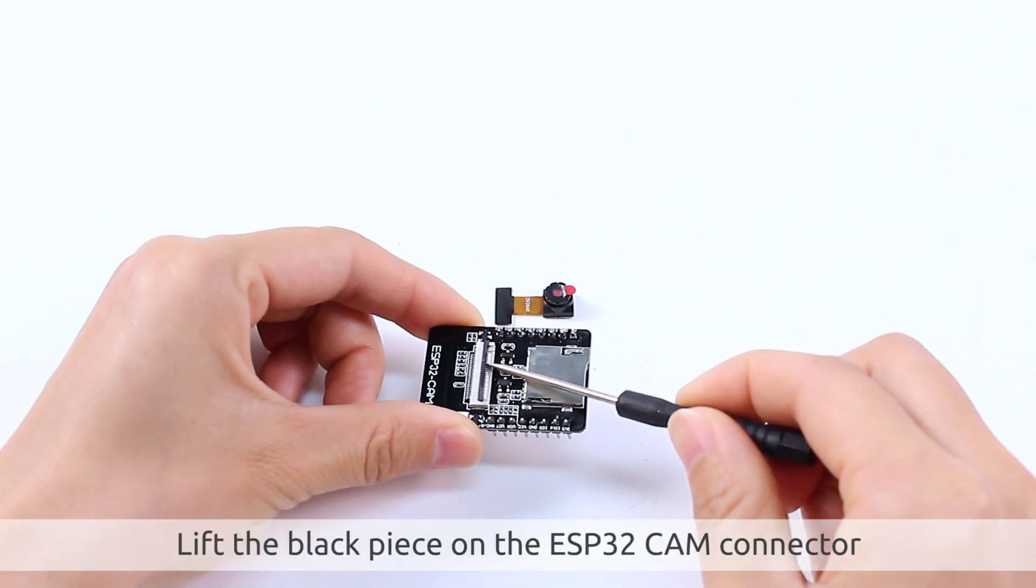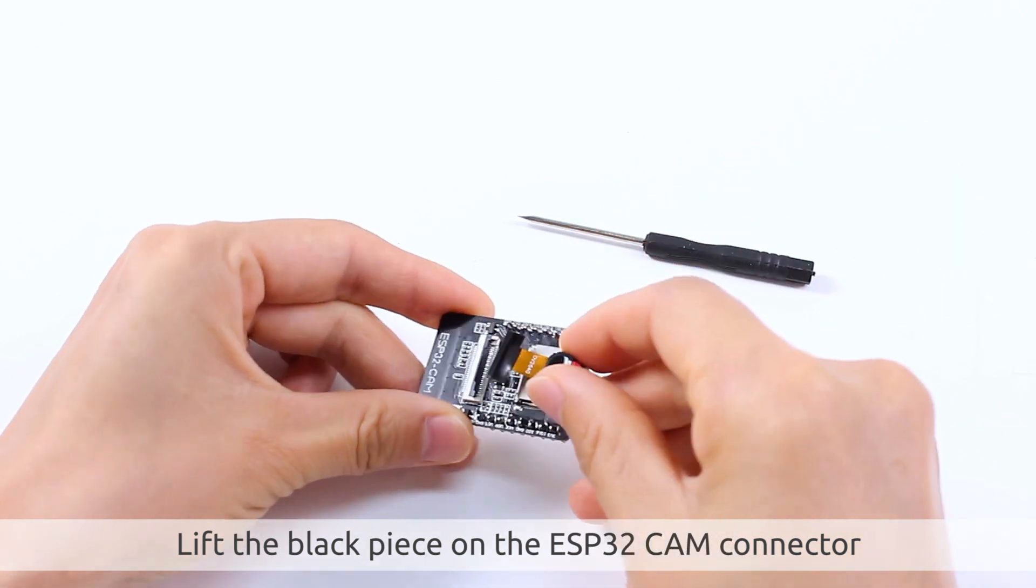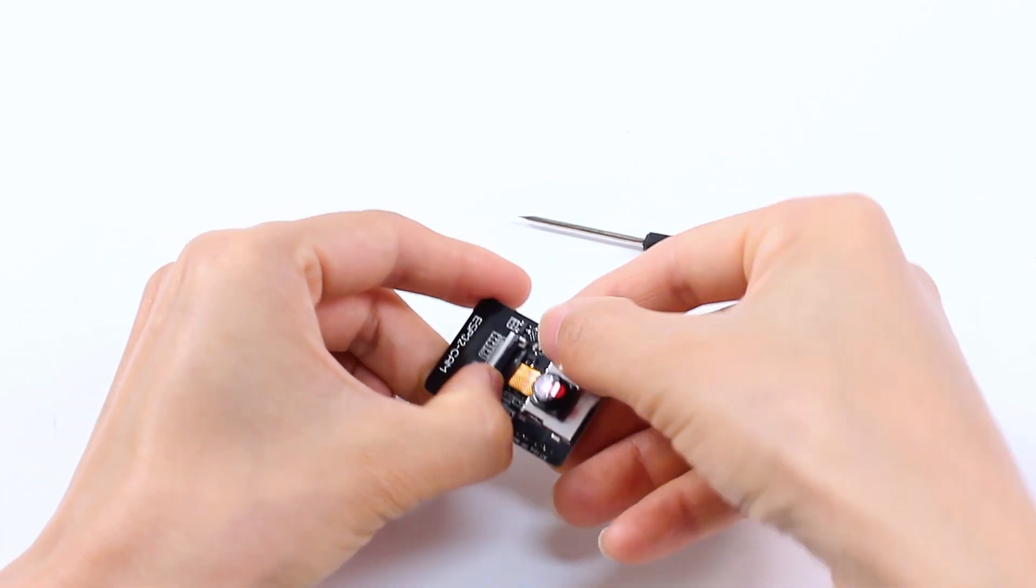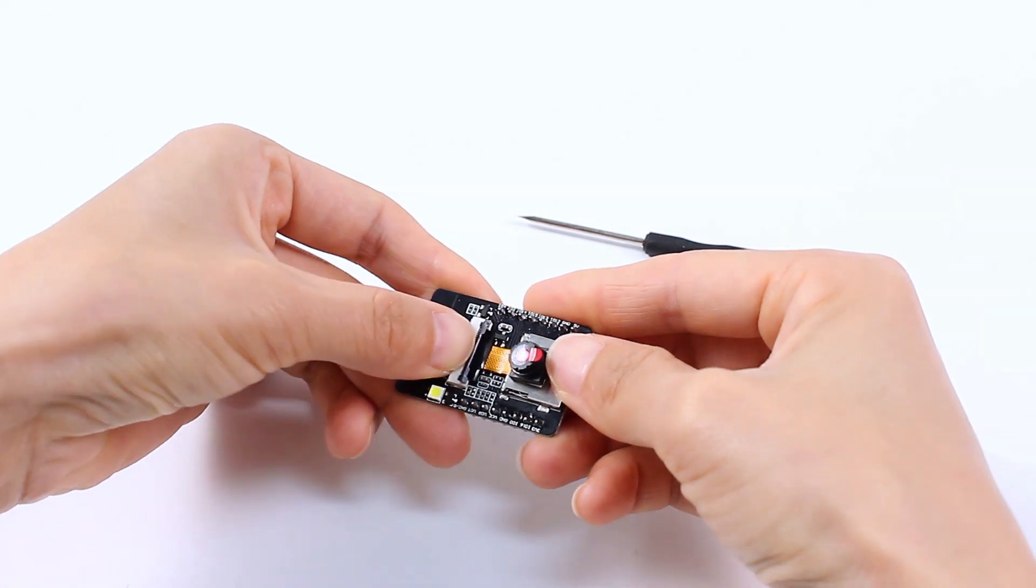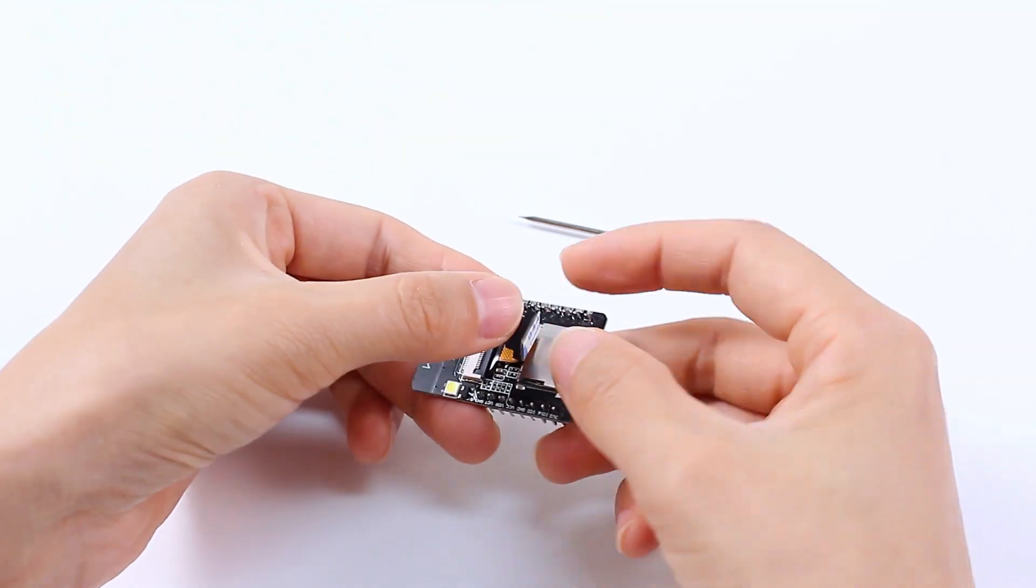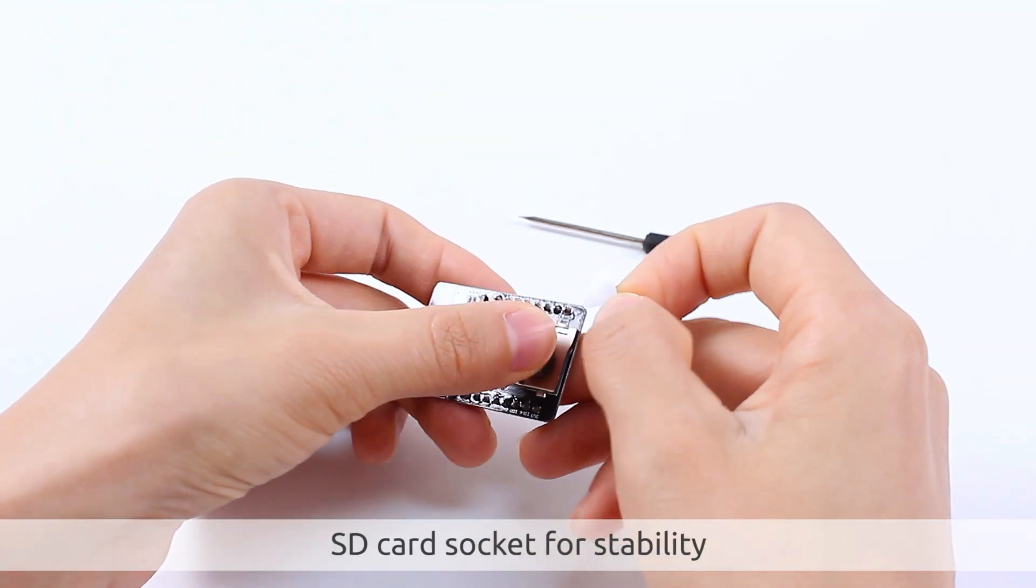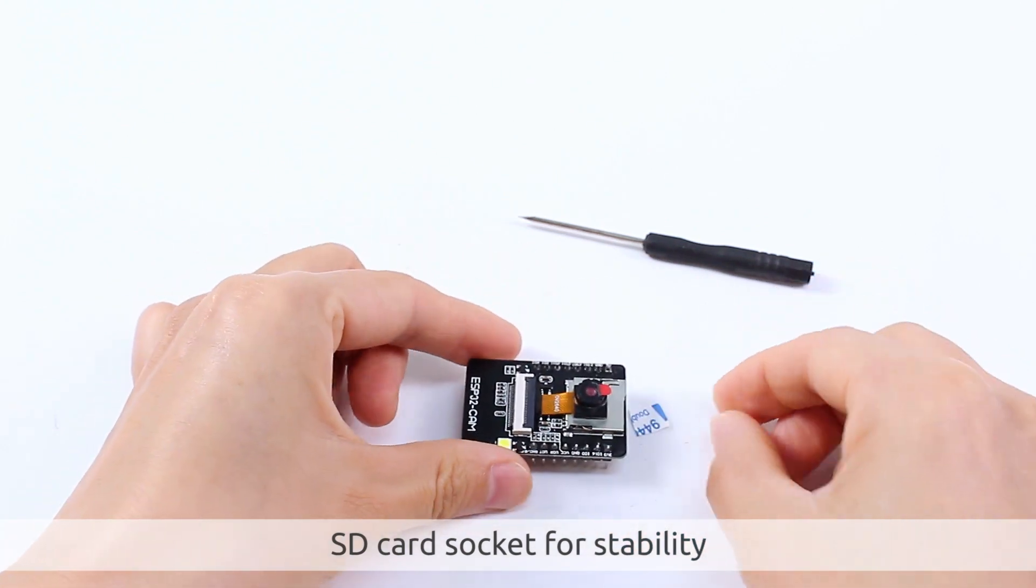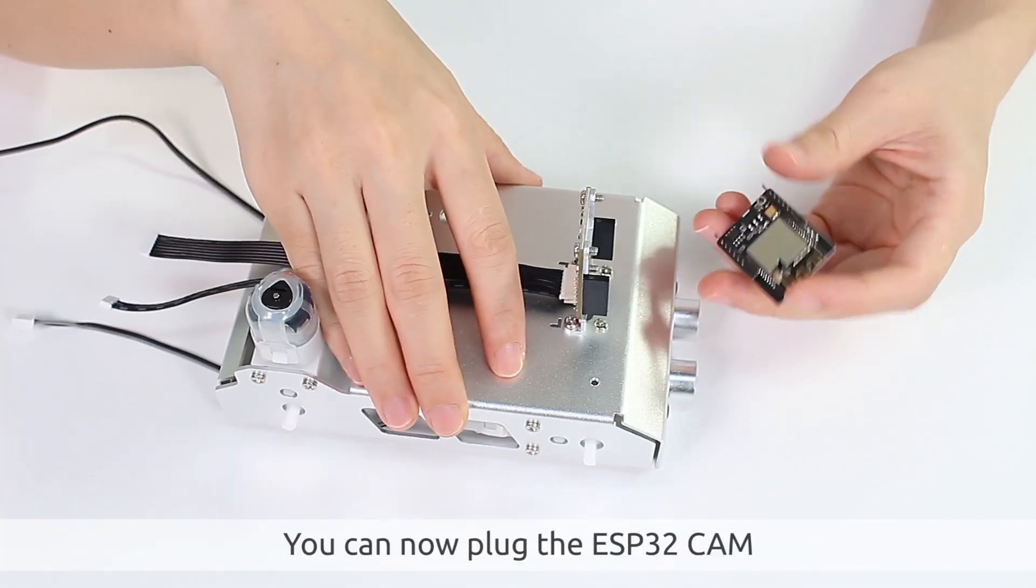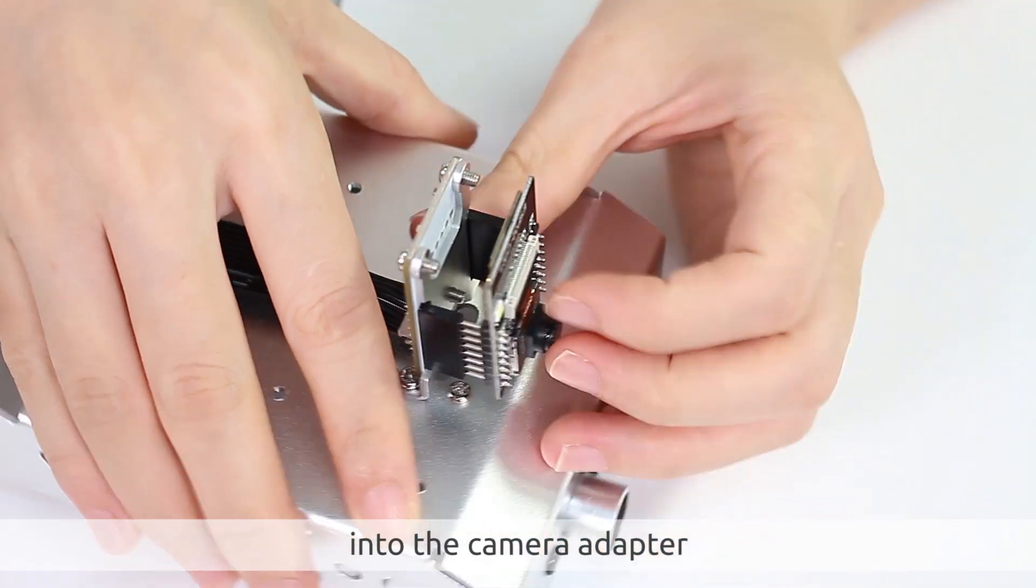Lift the black piece on the ESP32 camera connector. Insert the camera and then stick it onto the SD card socket for stability. You can now plug the ESP32 camera into the camera adapter.